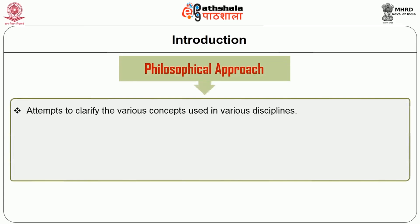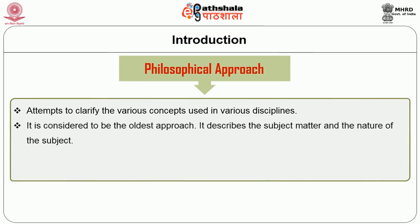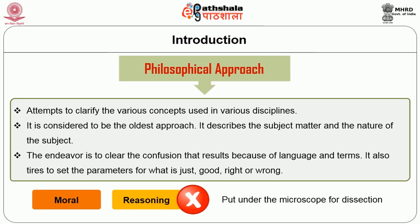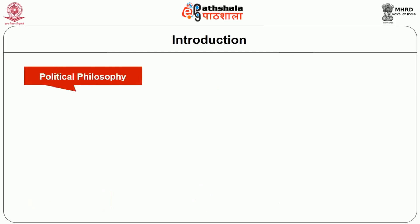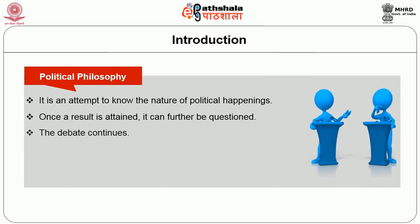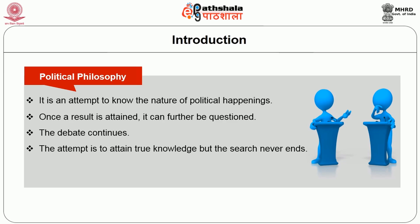The philosophical approach attempts to clarify the various concepts used in various disciplines. It is considered to be the oldest approach; it describes the subject matter and the nature of the subject, and endeavours to clear the confusion that results because of language and terms. It also tries to set the parameters for what is just, good, right or wrong. Everything is based on moral reasoning and cannot be put under the microscope of dissection. Political philosophy is an attempt to know the nature of political happenings; once a result is attained it can be further questioned, and the attempt is to attain true knowledge but the search never ends.